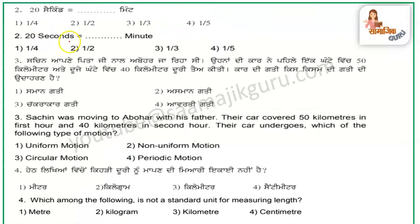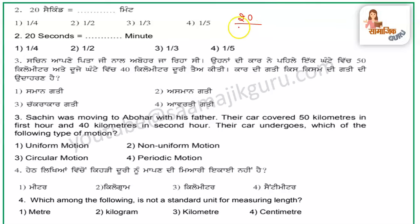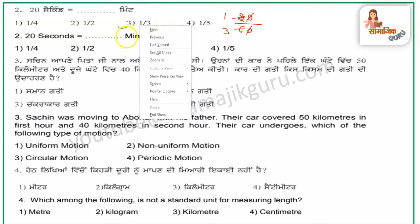The next question: 20 seconds is equal to how many minutes? We have to convert it into minutes. We know that one minute is 60 seconds, so we divide 20 by 60. The zeros cancel, giving us 2 over 6, which simplifies to 1 over 3. So the answer is 1/3 minute.